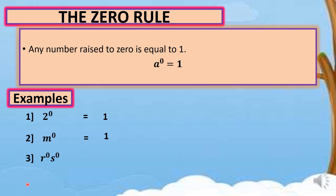Example number three: you have two variables, each with an exponent of zero. We have R raised to zero and S raised to zero. By rule, R raised to zero equals one, and S raised to zero also equals one. So one times one gives us a final answer of one.